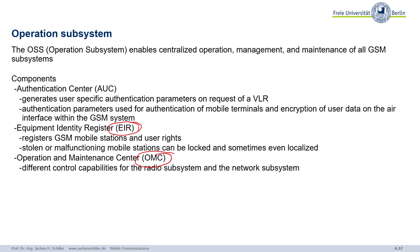Then we have the Authentication Center. That's very important because it is the counterpart to the security functions we have in our SIM. I will show you this when I come to the security of the system. There we generate user-specific authentication parameters on request of the VLR. We need this for authentication of the terminals and for encryption of data — at least encryption on the air interface, not end-to-end, not inside the network. I will come back to the AuC when I talk about encryption and security.